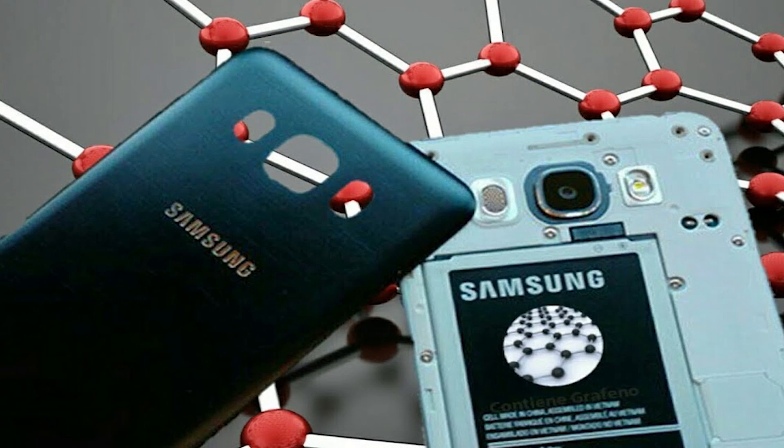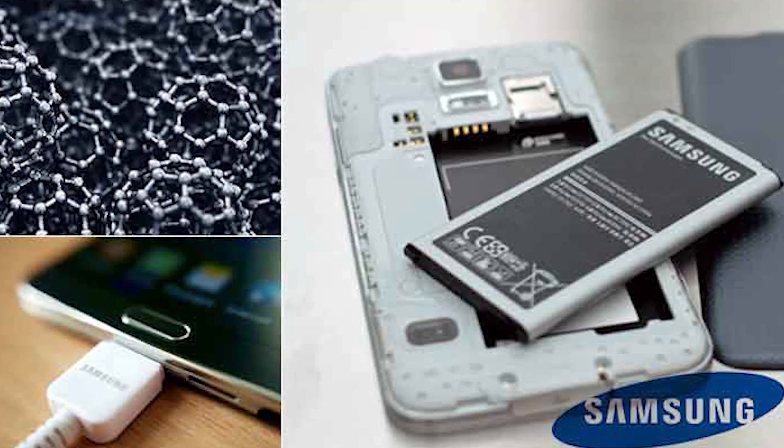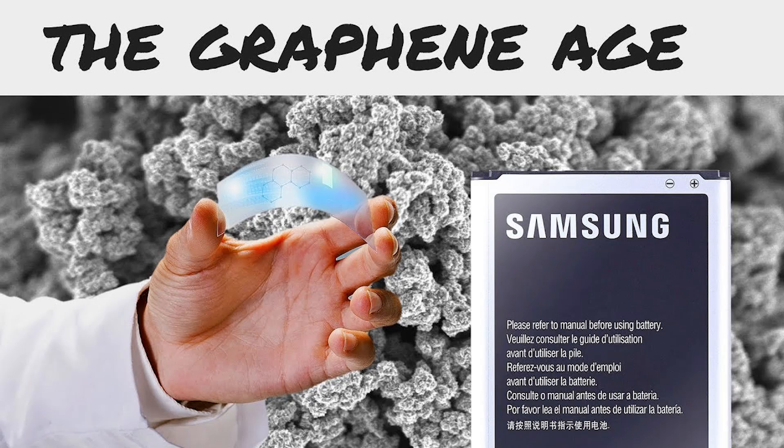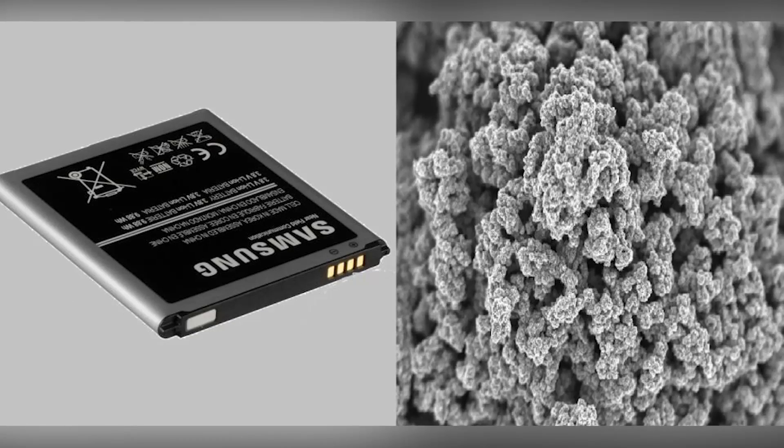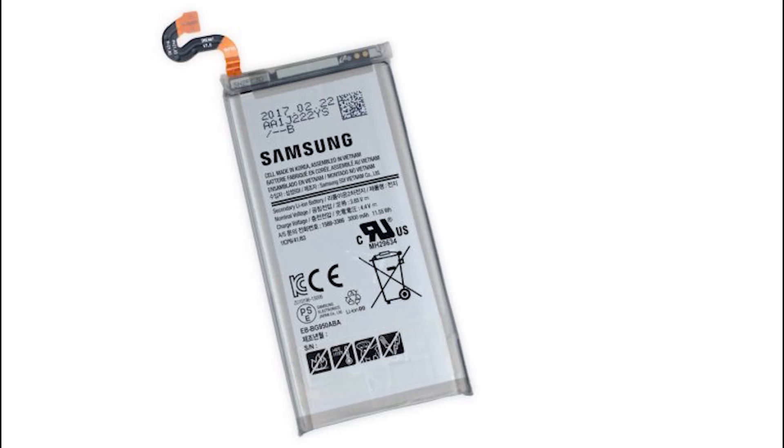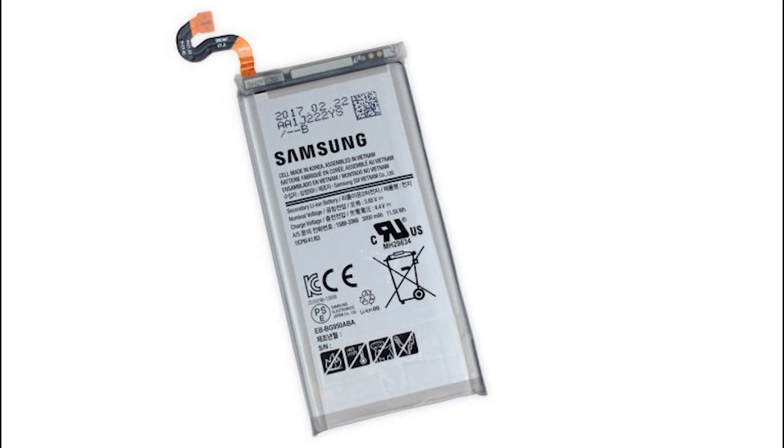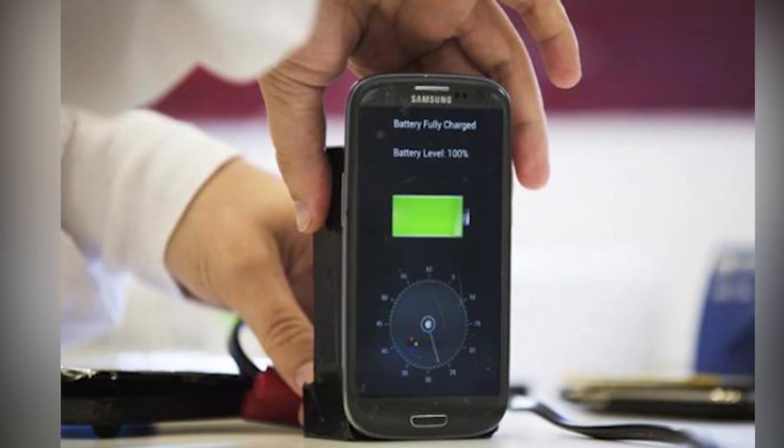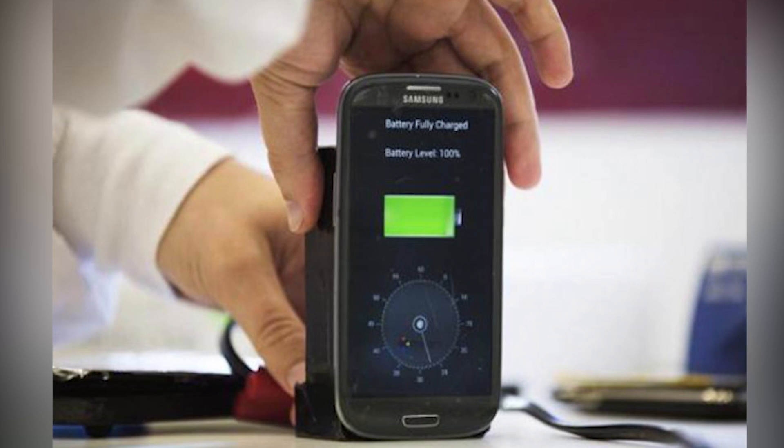Samsung in November 2017 revealed that it had developed a technology based on a graphene ball. This could potentially boost its battery capacity by 45% and increase charging speed five-fold. Their goal is to have a graphene-based power unit charge in only 12 minutes.